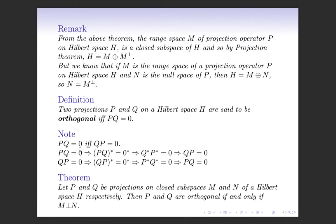We note that if PQ equals 0, then QP equals 0, and conversely. If PQ equals 0 then taking the Hilbert adjoint: (PQ)* equals Q*P* equals 0, because the null operator is self-adjoint. Since P and Q are orthogonal projection operators they are self-adjoint, so Q* equals Q and P* equals P, giving QP equals 0. Similarly QP equals 0 implies PQ equals 0. So the orthogonality condition can equivalently be written as QP equals 0.